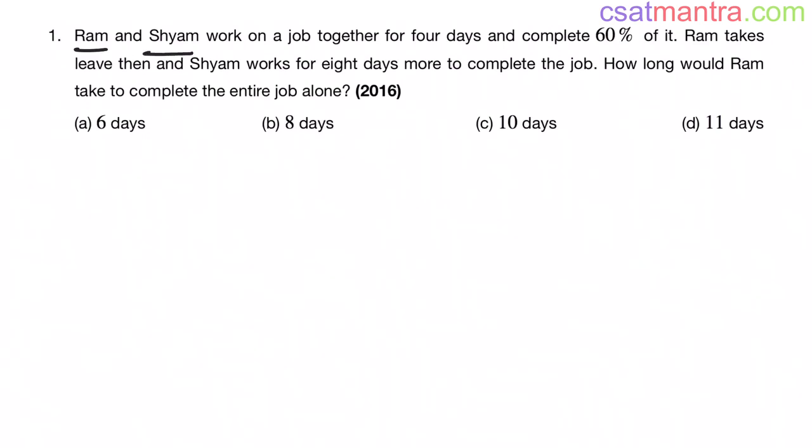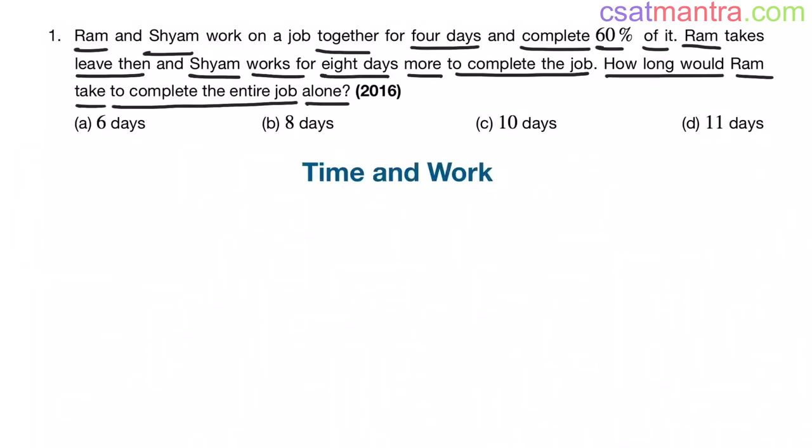Ram and Shyam work on a job together for 4 days and complete 60% of it. Ram takes leave then and Shyam works for 8 days more to complete the job. How long would Ram take to complete the entire job alone? This question is from the time and work chapter, asked in 2016.